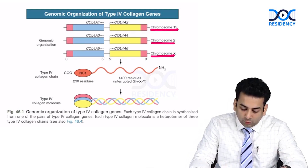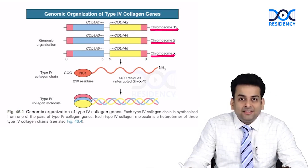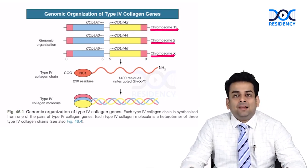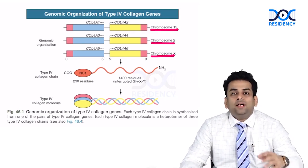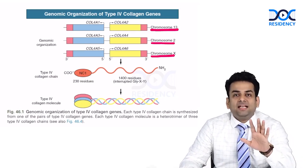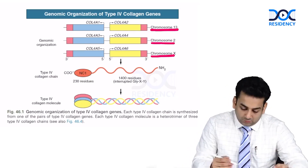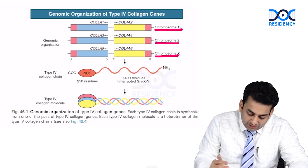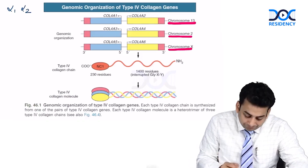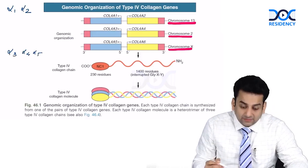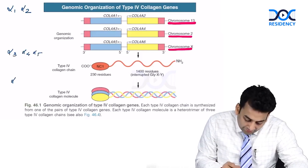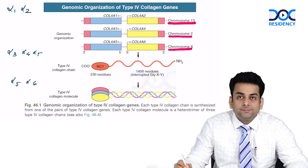These six alpha chains organize among themselves to form three networks: the alpha 1/alpha 2 network, the alpha 3/alpha 4/alpha 5 network, and the alpha 5/alpha 6 network.